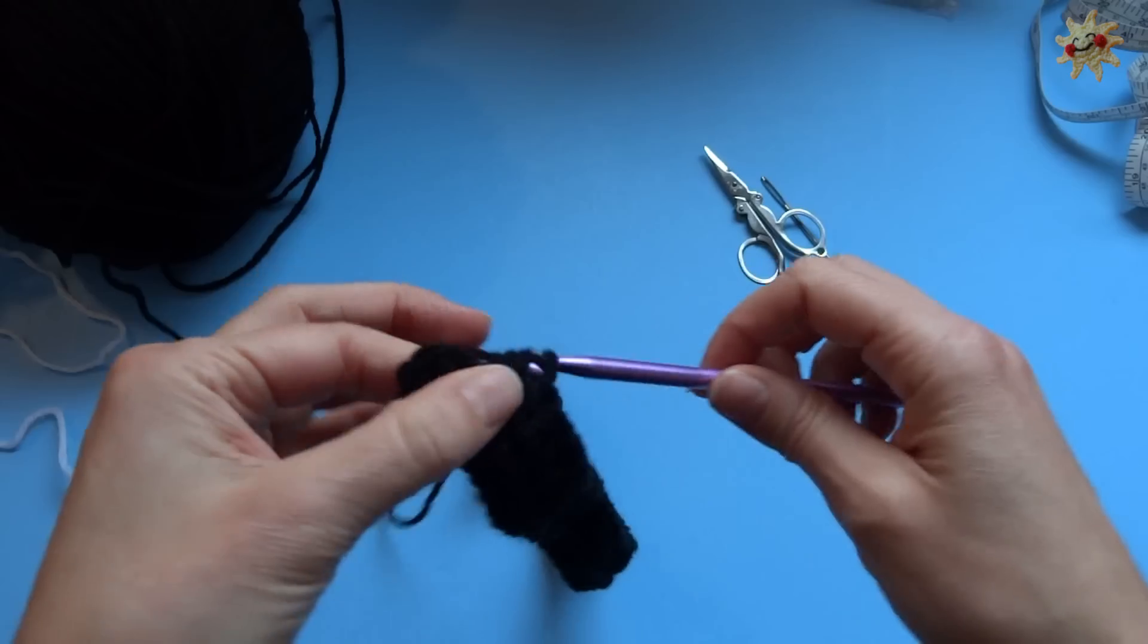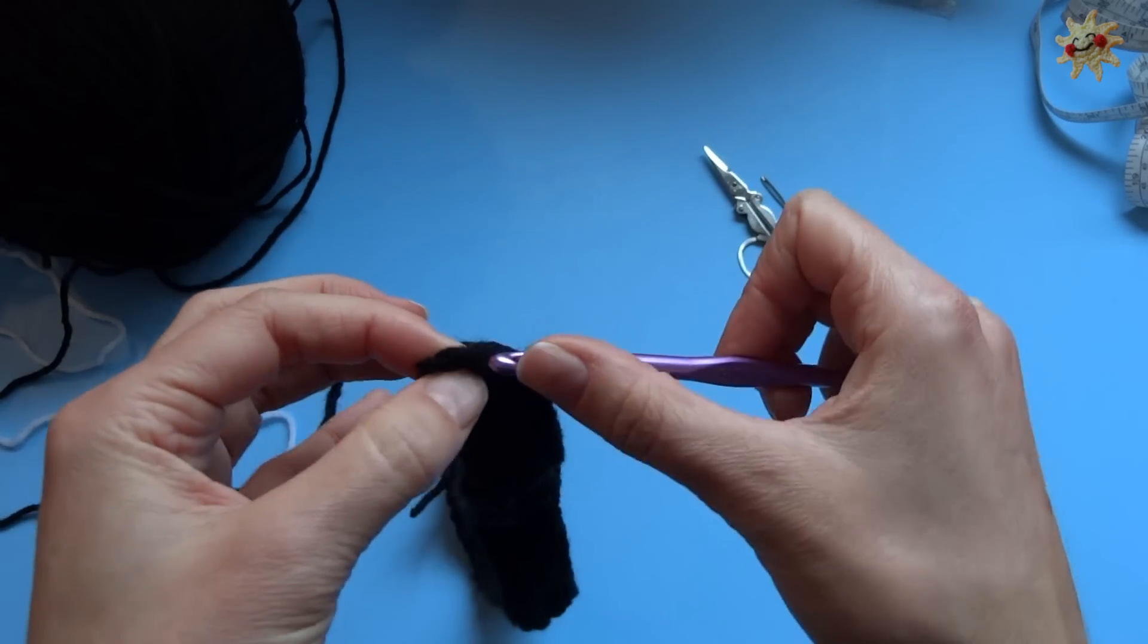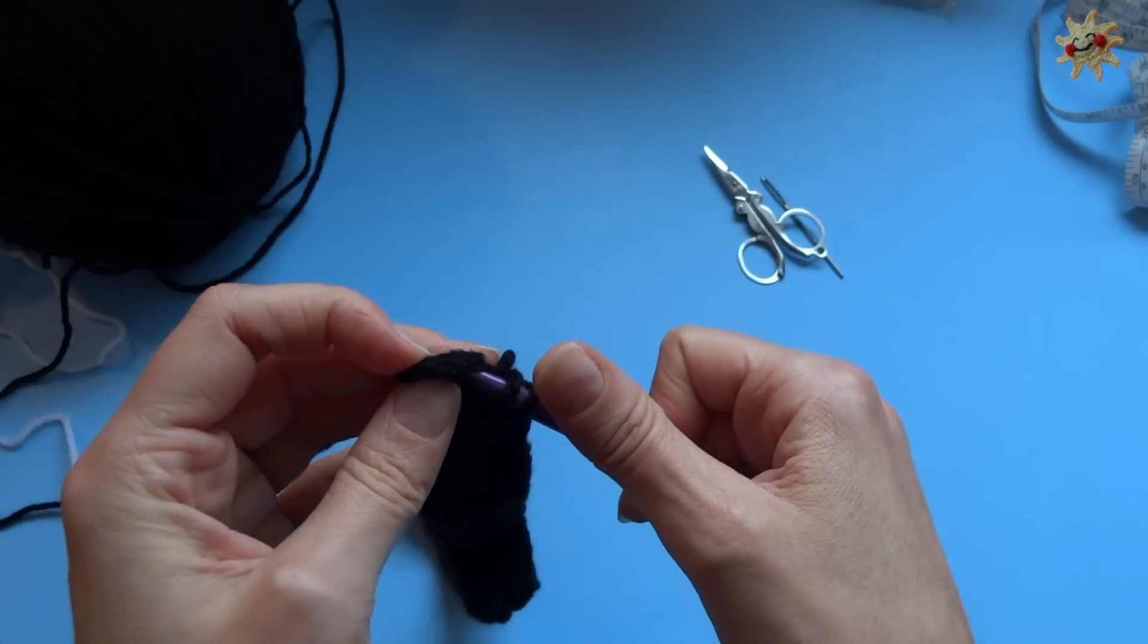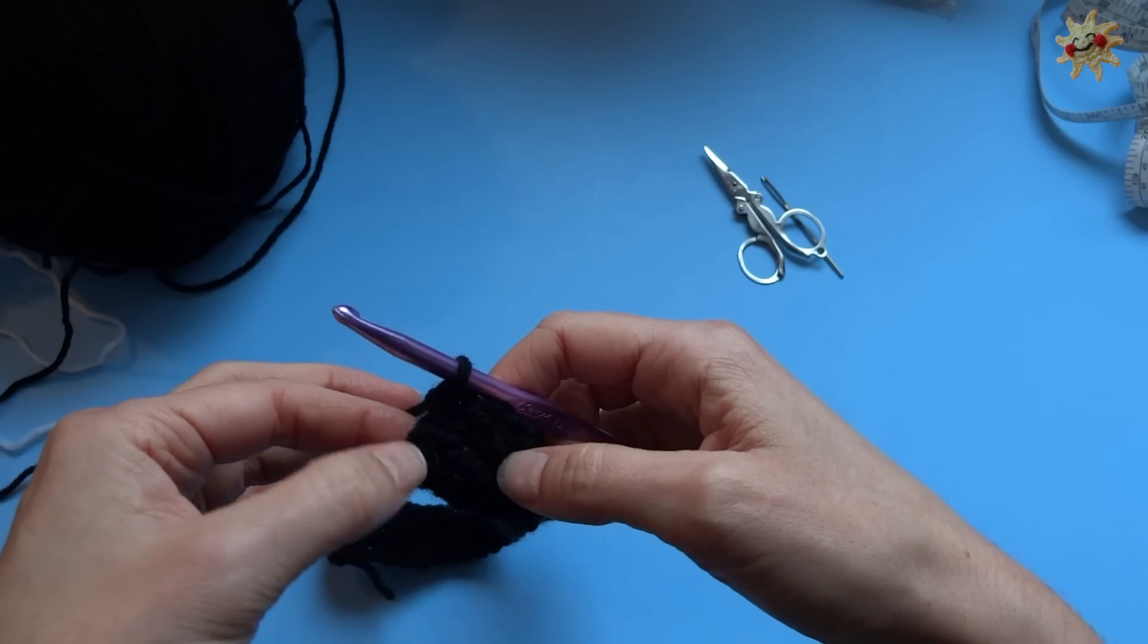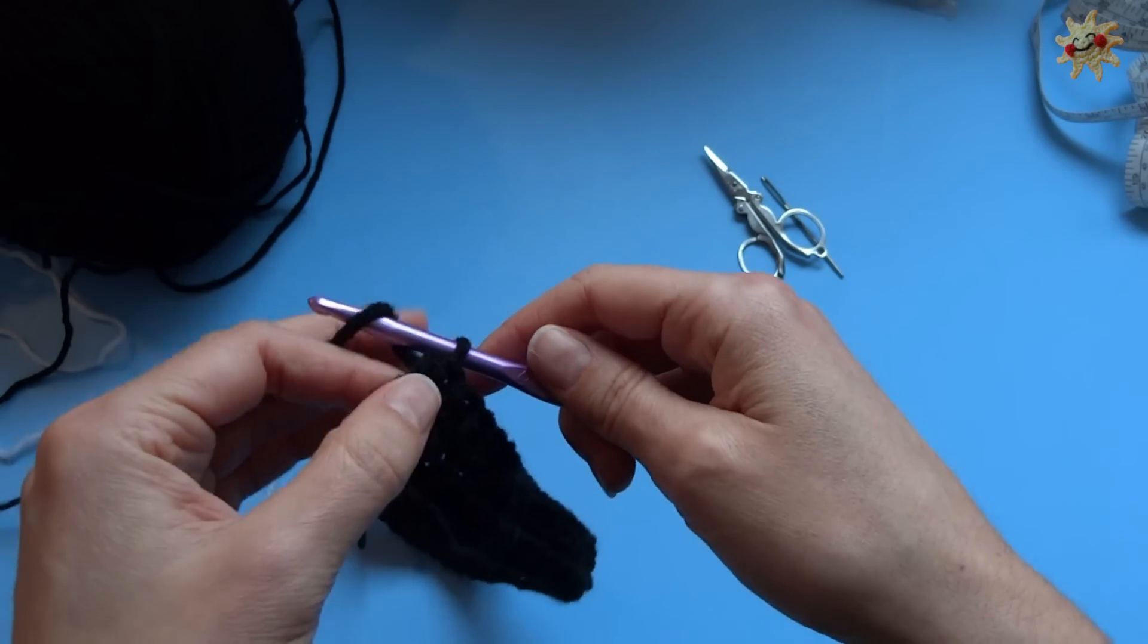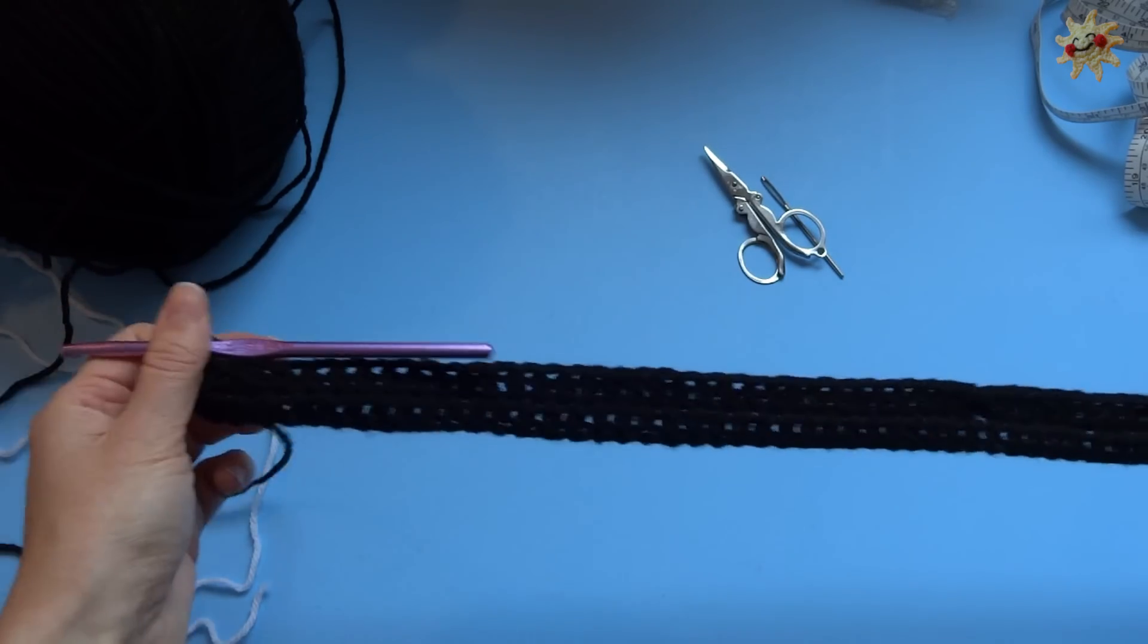Okay. As you're nearing the end of your second row, you're going to put your last half double crochet in the top of the last real half double crochet stitch. So you're going to ignore the chain two from the previous row, kind of like it doesn't exist. And then because you're done, this two rows of black equals one stripe.